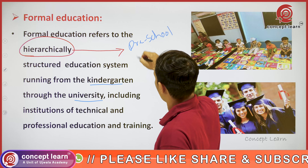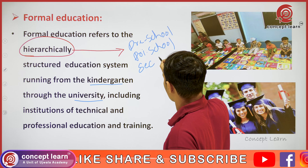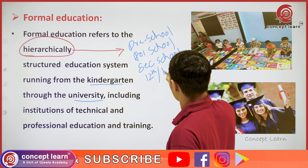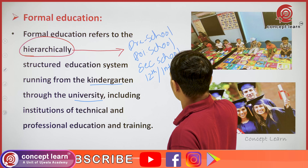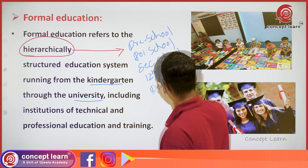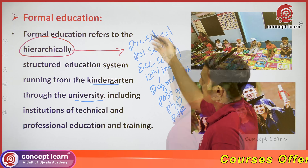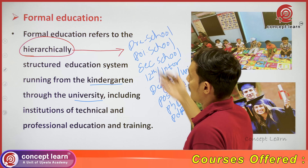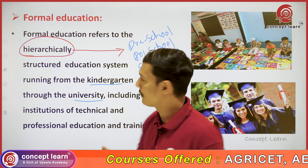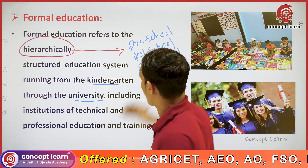After play school comes primary school, then secondary school, then 12th or intermediate, and after that degree — that is the university level — and post graduation. This is the hierarchy. Formal education means the hierarchy which runs from kindergarten, that is the play school, to the university.